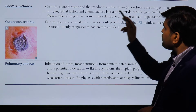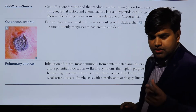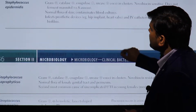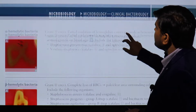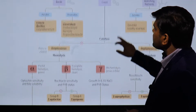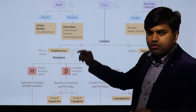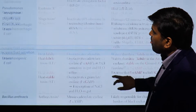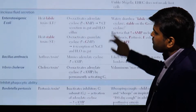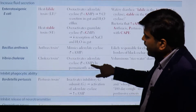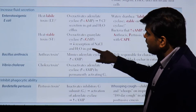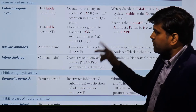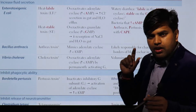Bacillus anthracis is a gram-positive spore-forming rod that produces anthrax toxin. This toxin acts by increasing cyclic AMP — it mimics adenylate cyclase and increases fluid secretion. We have discussed this toxin previously in the gram-positive bacilli section. We need to correlate this information so we can answer scenario-based questions.